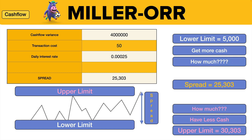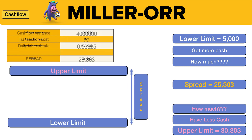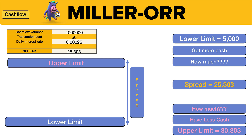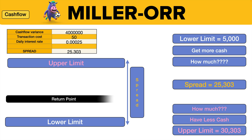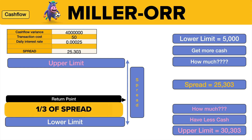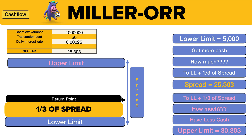The question is: how much? When we get to the limits and need to do something, you always want to return the cash balance to what we call the return point. As you can probably tell, the return point isn't exactly in the middle — it's actually one third of the way up. So the return point is your lower limit plus one third of the spread.